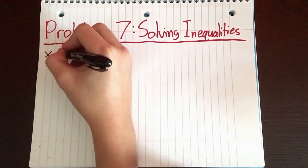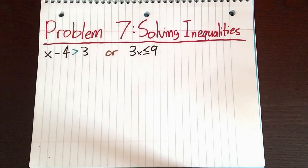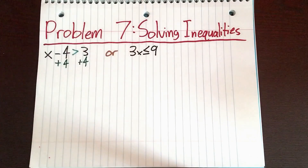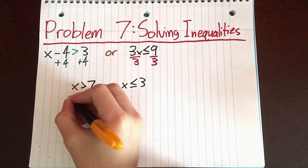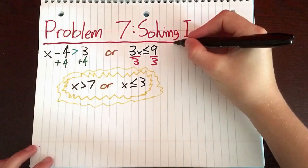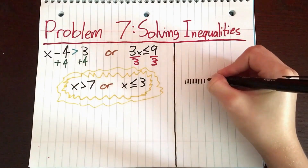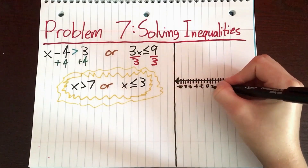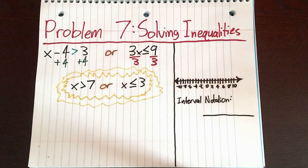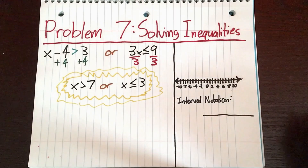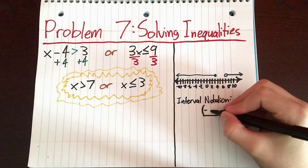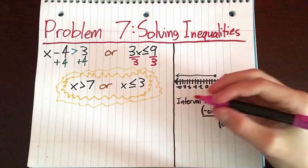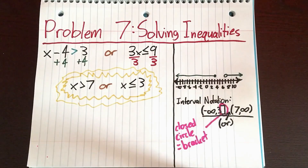Problem 7: solving inequalities. We set up our compound equation: x minus 4 is greater than 3, or 3x is less than or equal to 9. We add 4 to both sides for the first, and divide by 3 for the second. That gives us x is greater than 7, or x is less than or equal to 3. We set up a number line going from negative 10 through 10. We put a filled circle at 3 for x is less than or equal to 3, with the arrow going left, and an open circle at 7 for x is greater than 7. Our interval notation is negative infinity to 3, bracket, or (7, infinity).